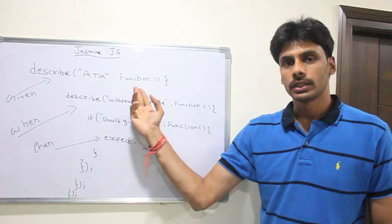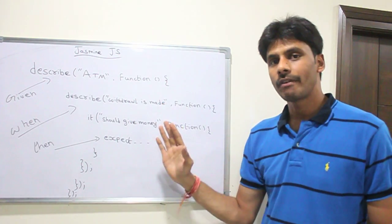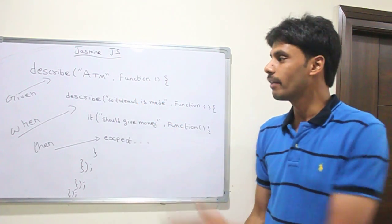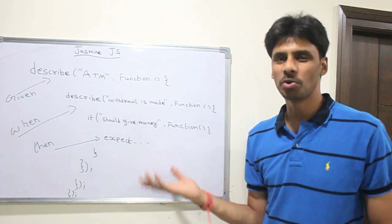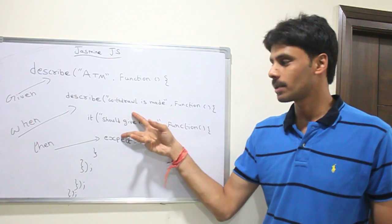Describe takes two parameters. The example I have here is an ATM example. Given an ATM, when a withdrawal is made, should give money. So this is the acceptance criteria here.